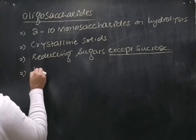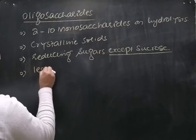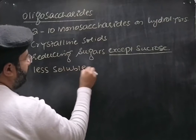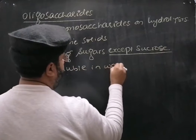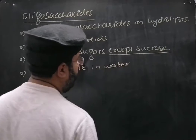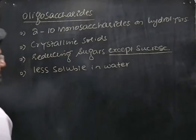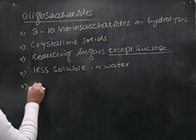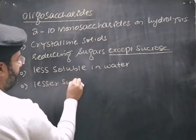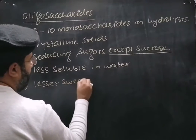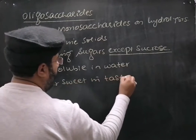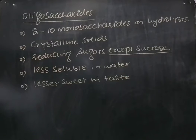The oligosaccharides are less soluble in water as compared to the monosaccharides, because as the size of the molecule increases, its solubility decreases. And they are also lesser sweet in taste as compared to the monosaccharides.